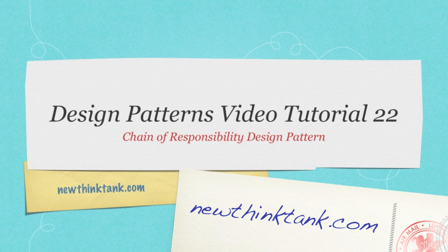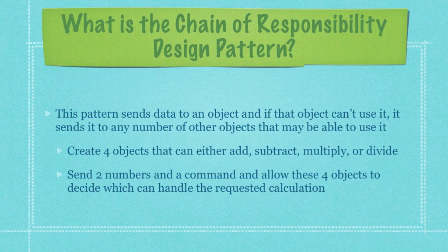Today we're going to talk about the Chain of Responsibility Design Pattern. This pattern has a group of objects that are expected to, between them, be able to solve a problem. If the first object can't solve it, it simply passes the data to the next object in the chain. In this example, I'm going to create four objects that can either add, subtract, multiply, or divide two numbers. The client is going to send two numbers and a command, and allow these four objects to decide which can handle the requested calculation.